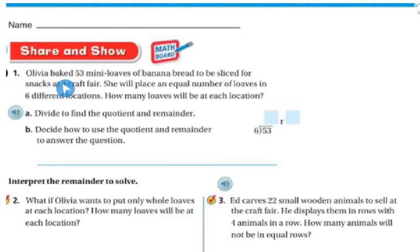Share and show. Olivia baked 53 mini loaves of banana bread to be sliced for snacks at a craft fair. She will place an equal number of loaves in 6 different locations. How many loaves will be at each location? So first we have to divide to find the quotient and the remainder. So 6 goes into 53. So I have to think my multiplication facts. 6 times 5 is 30. Well, that's too small. 6 times 6 is 36. That's too small.